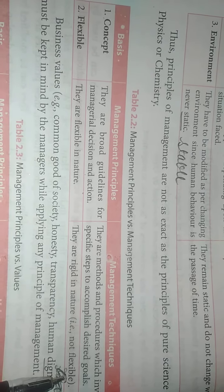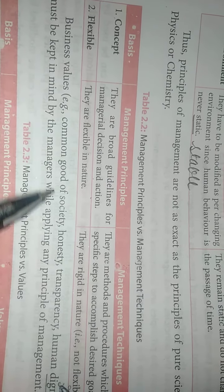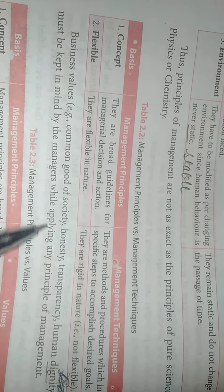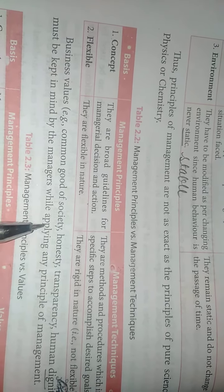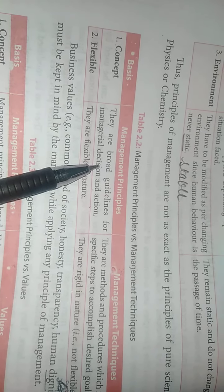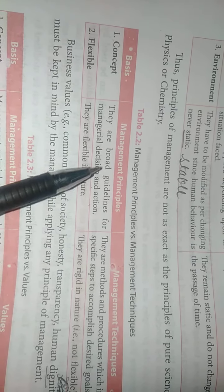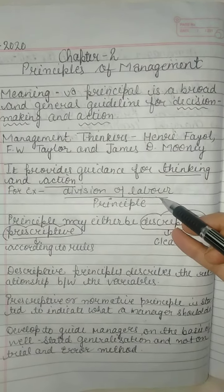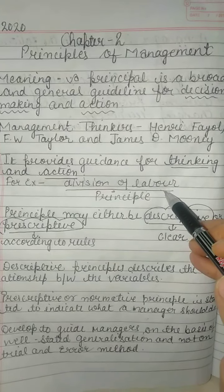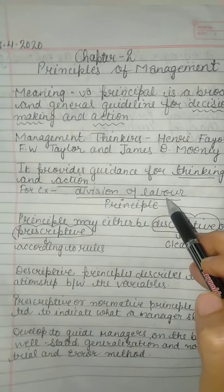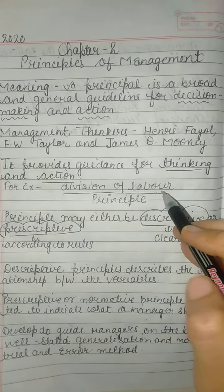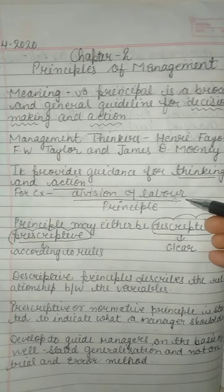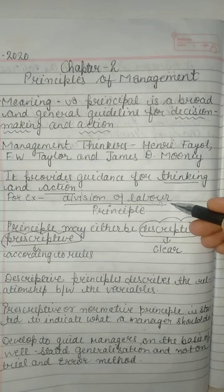When talking about management principles and society, honesty, transparency, and human dignity must be kept in mind by managers while applying any principles of management. You assign tasks to people who are transparent and honest — only then can you achieve your objective. After achieving your objective, you can help society by providing good quality goods at a reasonable price.